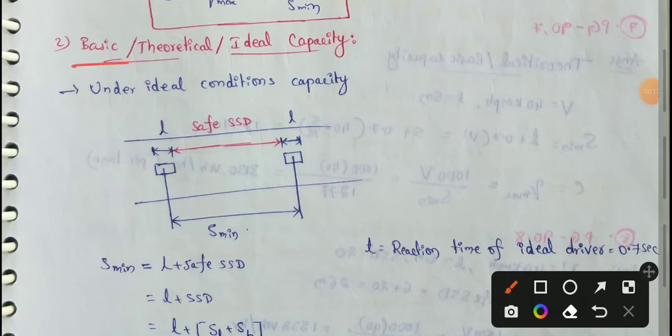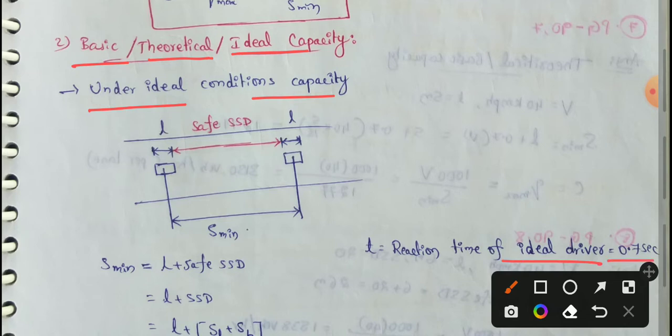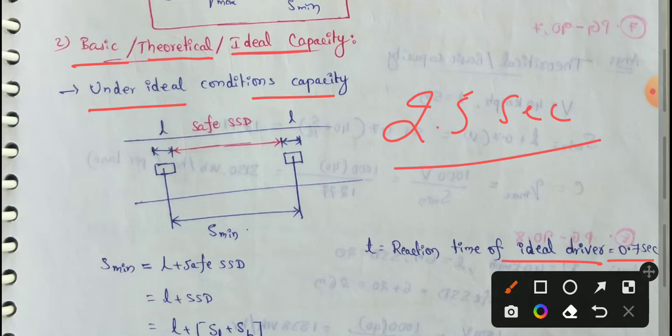Basic Capacity is also called Theoretical Capacity or Ideal Capacity — that is, capacity under ideal conditions. The driver reaction time of an ideal driver is 0.7 seconds, whereas under actual practical conditions, the reaction time is 2.5 seconds.